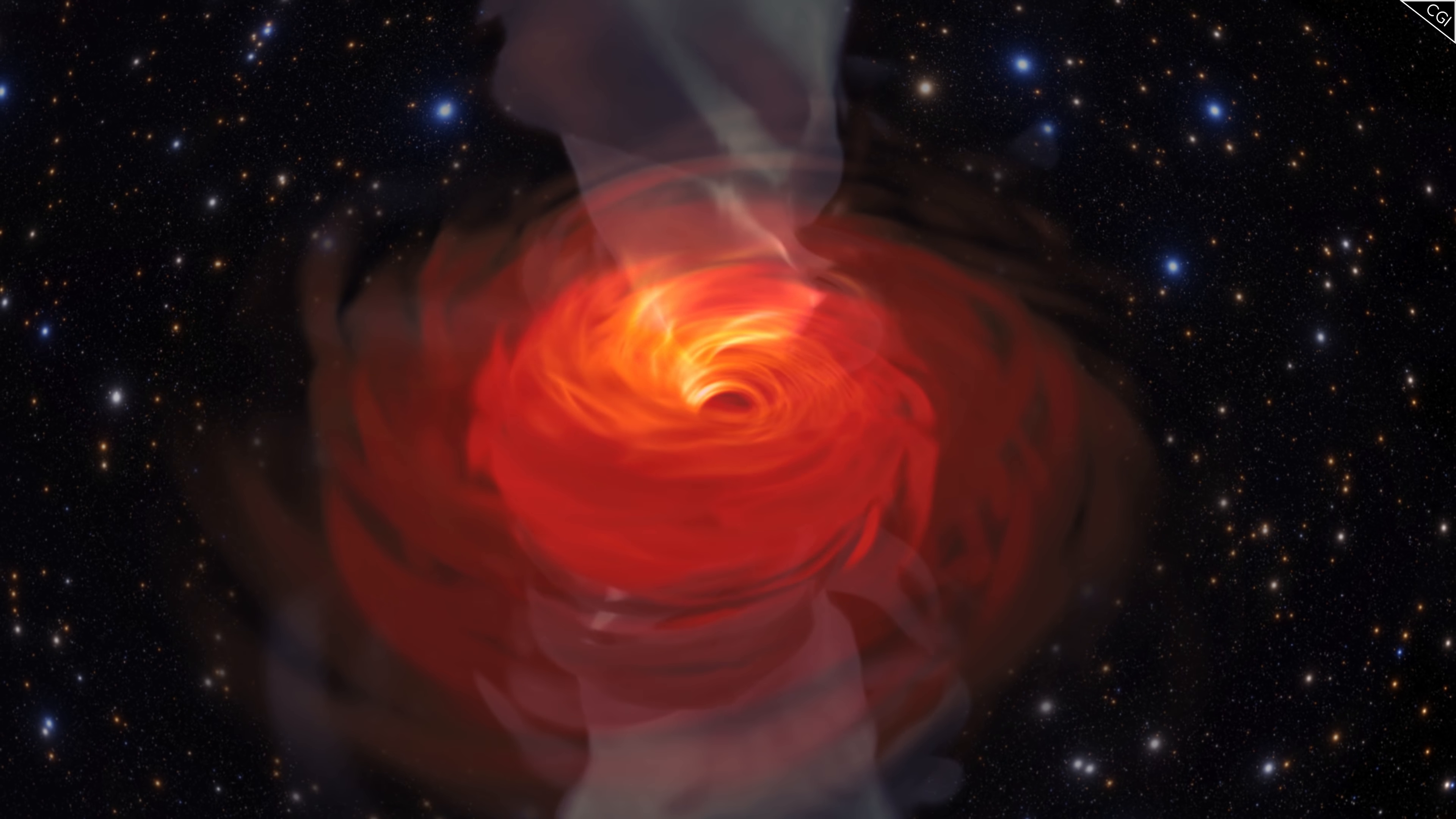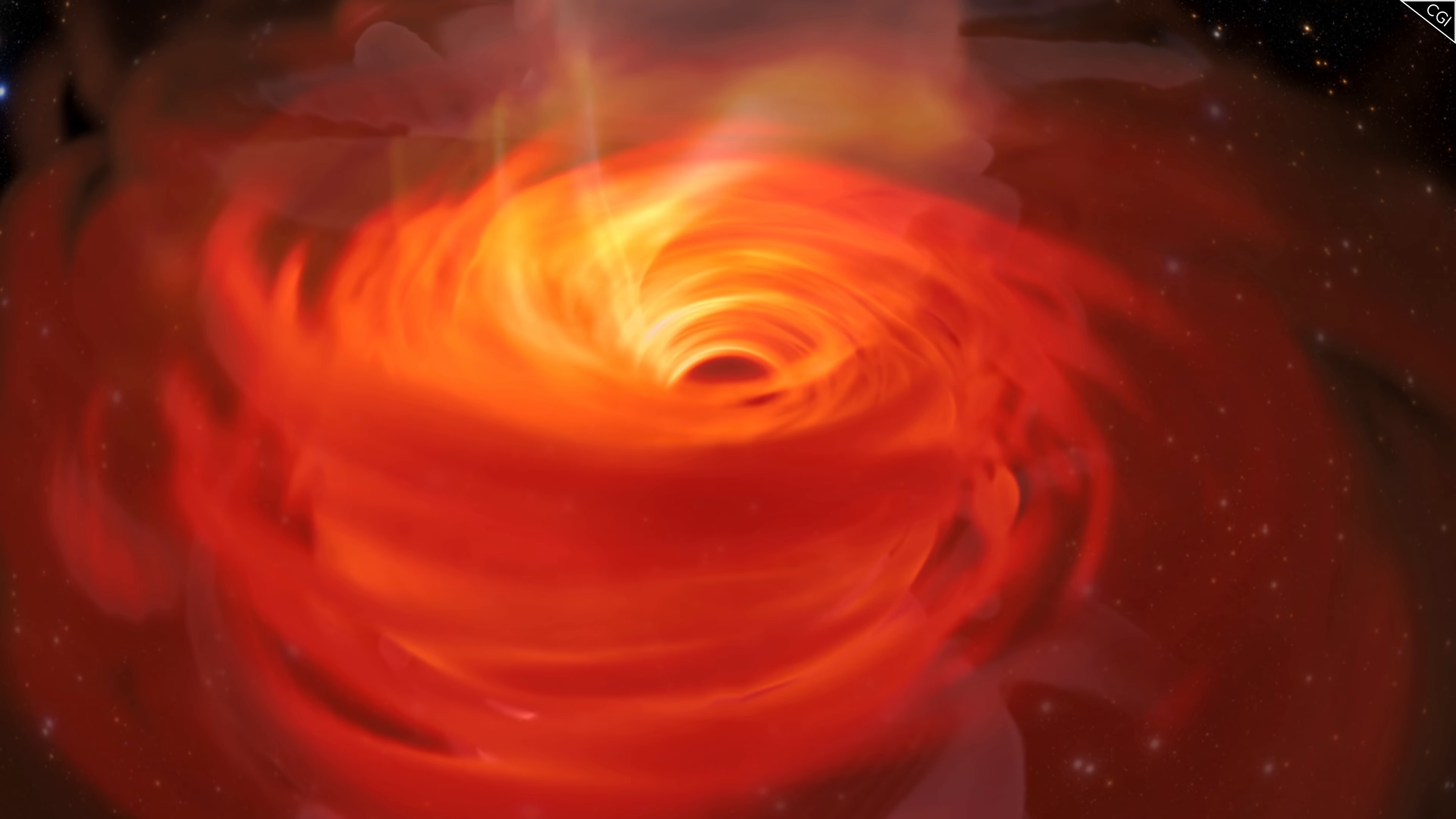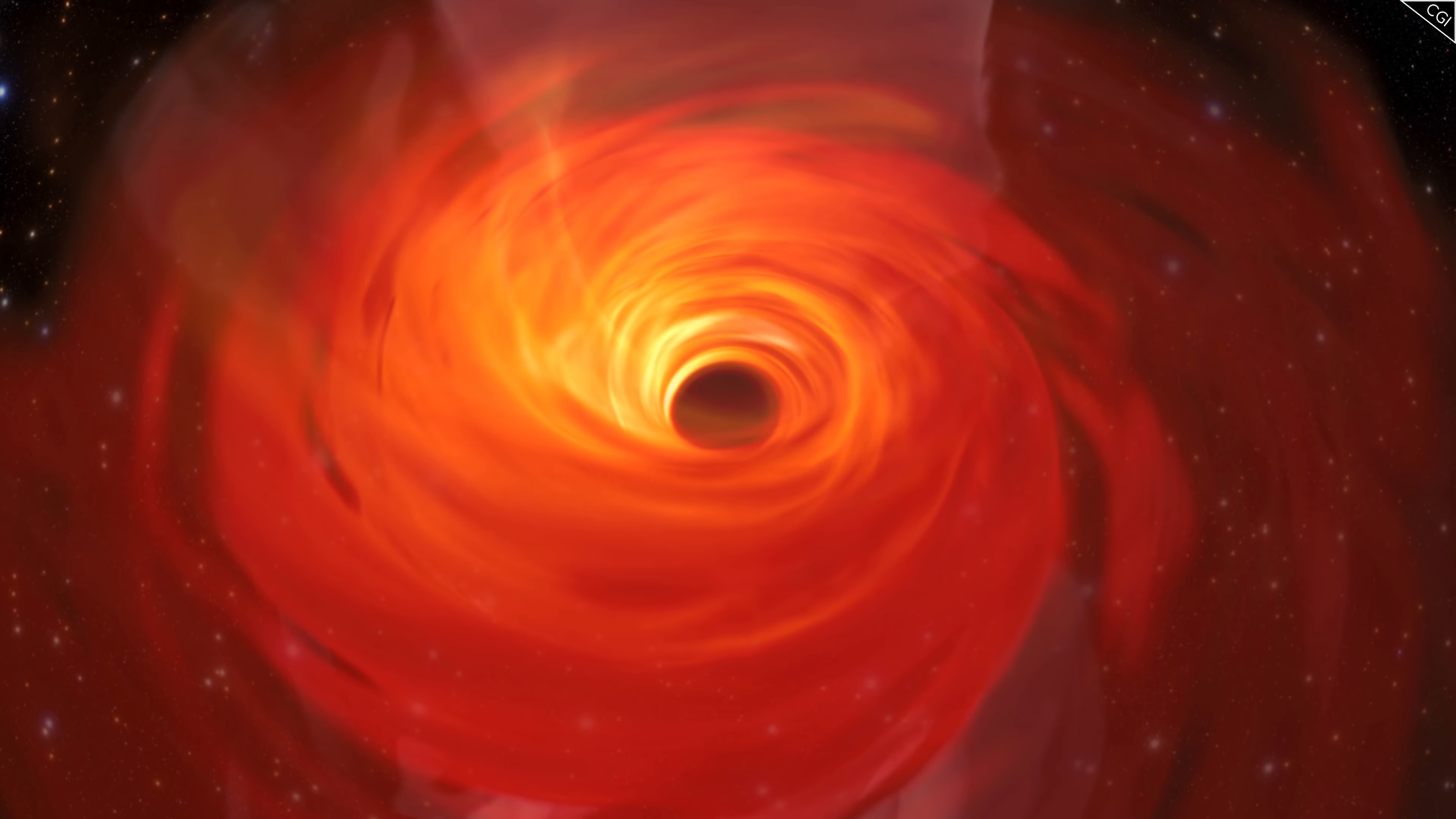It is in fact the accretion disk around the quasar that is so energetic and luminous. A black hole's accretion disk is the result of matter passing by, being ripped apart and sucked into orbit. These supermassive black holes often have billions of solar masses. The gravity around them is immense.